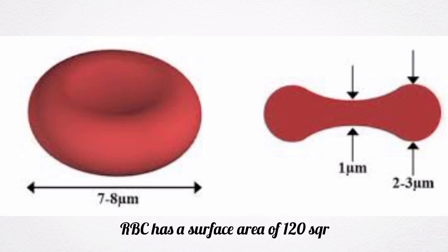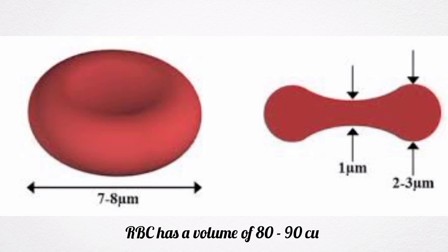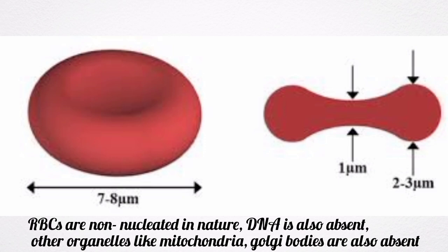The red blood cell has a surface area of 120 square microns and a volume of 80 to 90 cubic microns. Red blood cells are non-nucleated in nature. Because of the absence of the nucleus in human red blood cells, DNA is also absent. Other organelles such as mitochondria and Golgi apparatus are also absent in red blood cells.